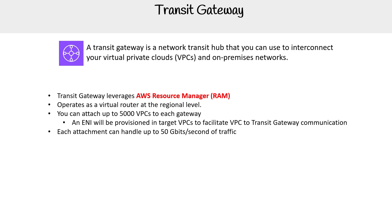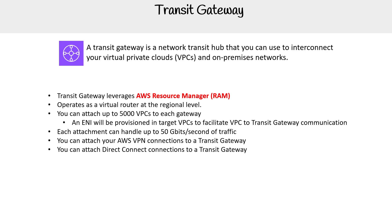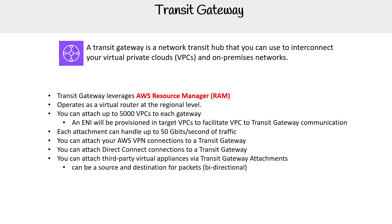Each attachment can handle up to 50 gigabits per second of traffic. You can attach AWS VPN connections, Direct Connect connections, and third-party virtual appliances via transit gateway attachments. Transit gateway can be a source and destination for packets, so it's bi-directional. You can also peer connections with other transit gateways — there's a lot you can do with transit gateways.